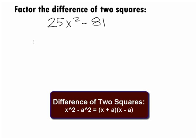it will factor as a product of the sum and difference of the bases that were being squared. And you get x plus a times x minus a.